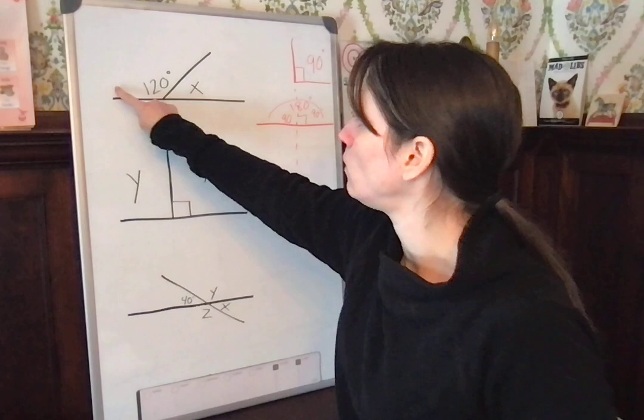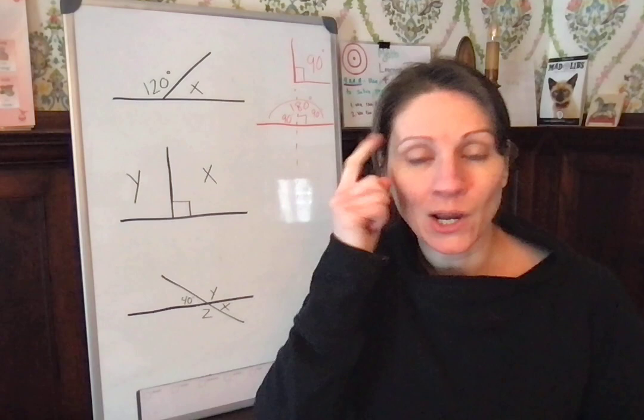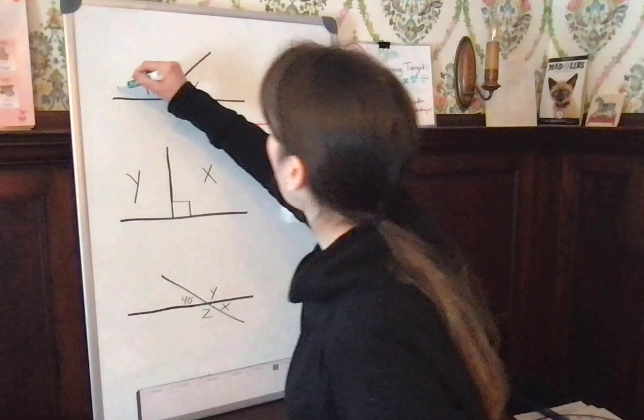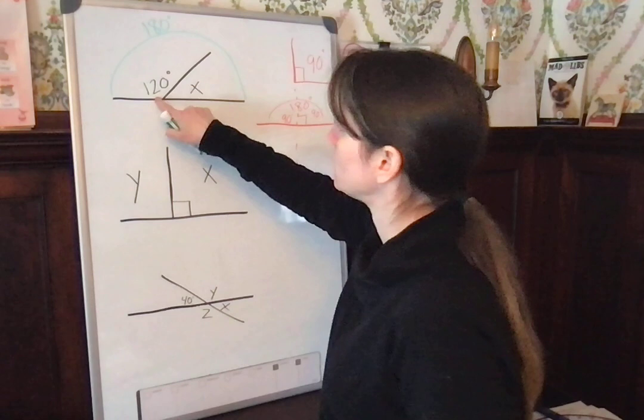We know this side is 120 degrees, but we don't know what x is. However, we know what a straight angle makes. We know a straight angle is 180 degrees. So this entire line is 180 degrees. This part is 120. So think of it as part, part, makes the whole.